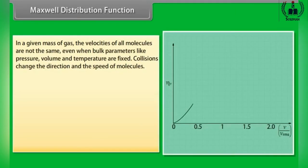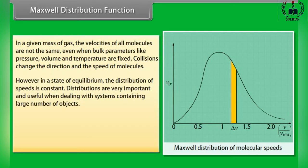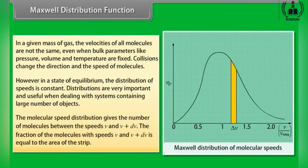Maxwell Distribution Function. In a given mass of gas, the velocities of all molecules are not the same, even when bulk parameters like pressure, volume and temperature are fixed. Collisions change the direction and speed of molecules. However, in a state of equilibrium, the distribution of speed is constant. Distributions are very important and useful when dealing with systems containing a large number of objects. The molecular speed distribution gives the number of molecules with speeds between V and V + dV. The fraction of molecules with speeds between V and V + dV is equal to the area of the strip.